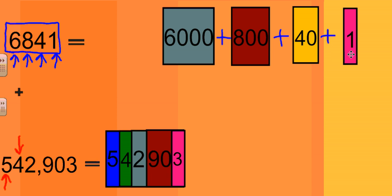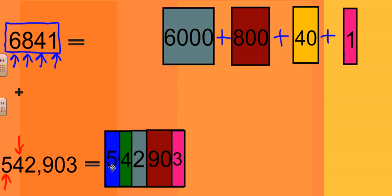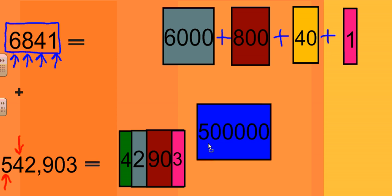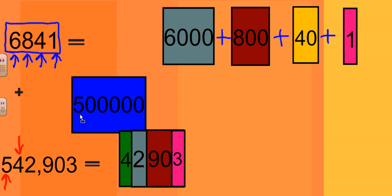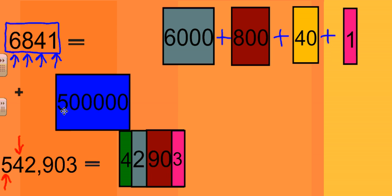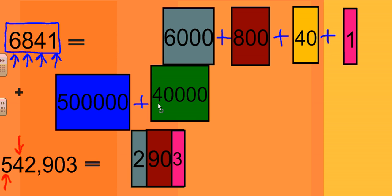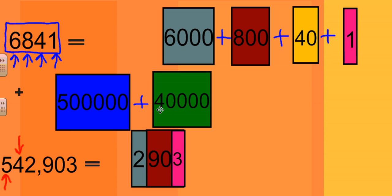We have the 4 in the ten thousands place and the 5 in the hundred thousands place. Working from left to right, we start with the 5, and 5 times 100,000 is equal to 500,000 — that will be our first number in our sum. Then we put in the plus sign and move on to the ten thousands place: 4 times 10,000 is 40,000.